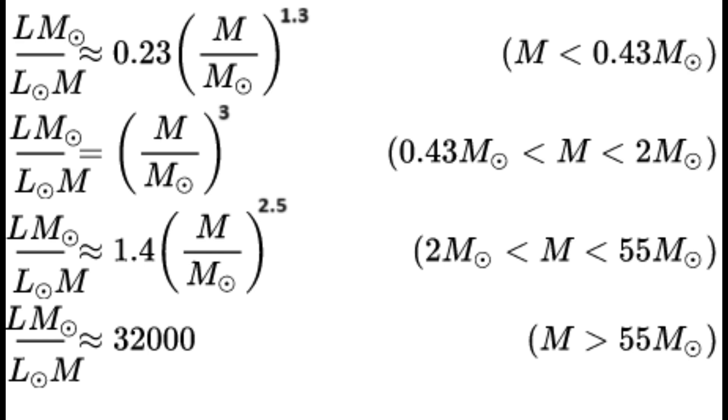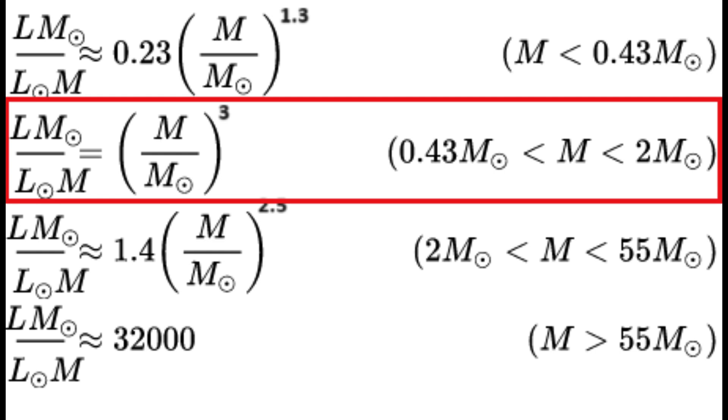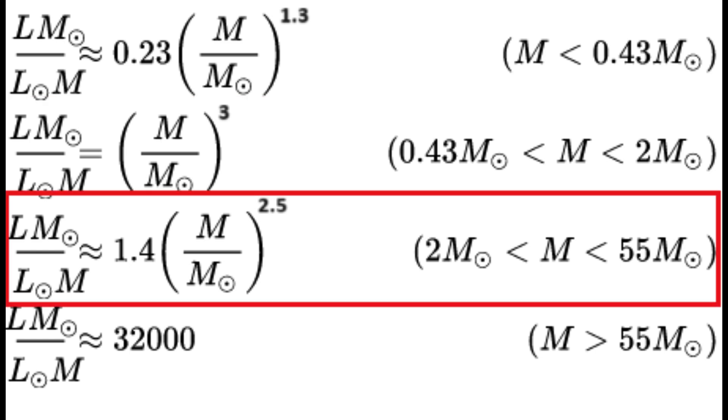Now, looking at the equation for the mass range which includes our own sun, 2 to the power of 3 is 8. So the answer to this question isn't in this range. Hence, we have to look at stars between 2 and 55 times the mass of our own sun.